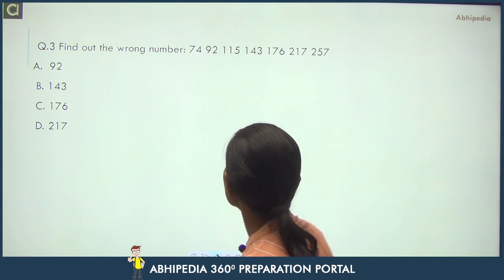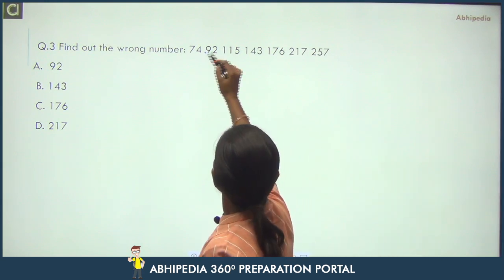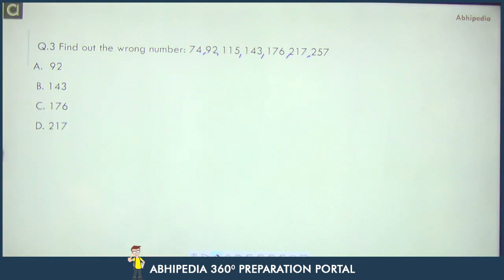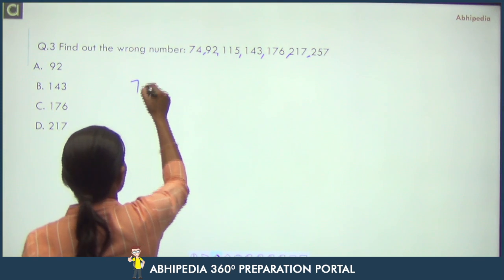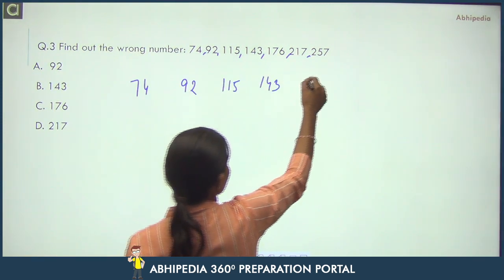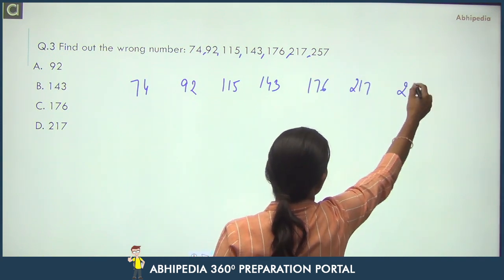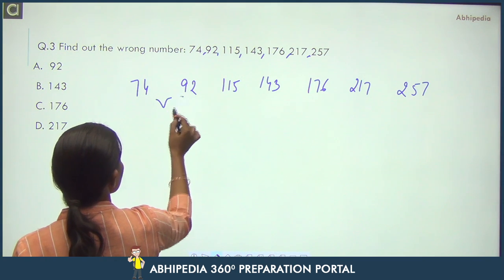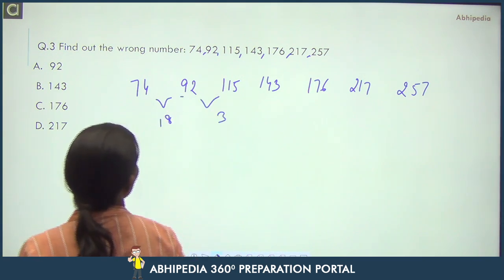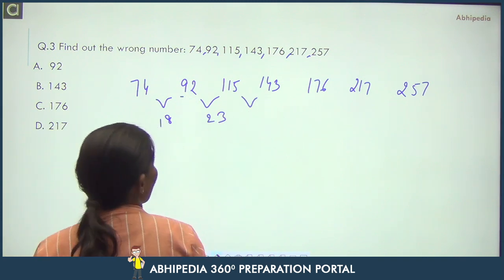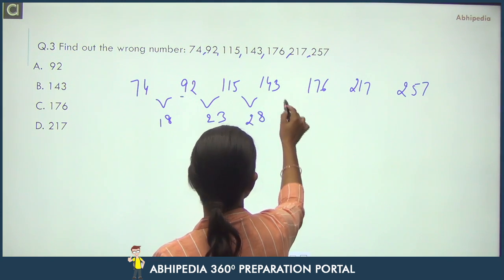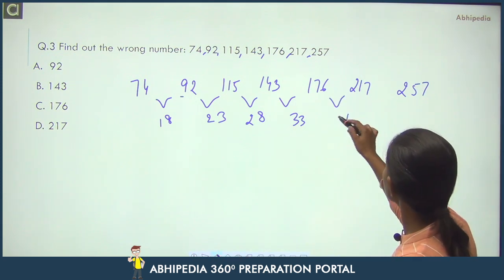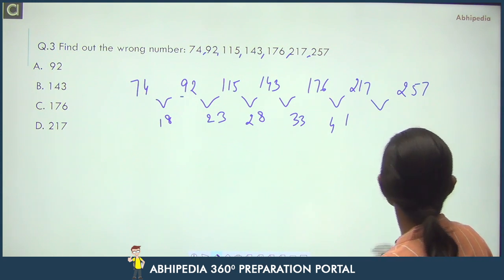Next: Find out the wrong number. Series: 74, 92, 115, 143, 176, 217, 257. First find the differences: 18, 23, 28, 33, 41, 40. Checking further differences: 5, 5, 5 — a constant difference of 5. But between 33 and 41, the difference is 8 instead of 5.